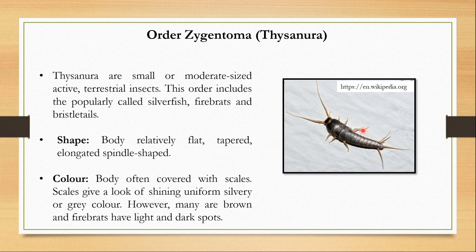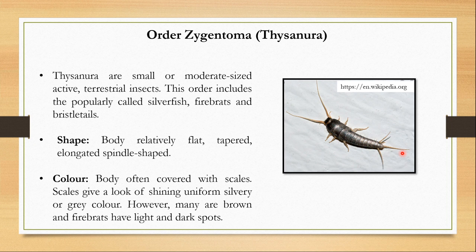The body is dorso-ventrally flattened and tapered towards the posterior end. It is elongated and spindle-shaped. Their color is silvery or grey due to the scales present on their body, which give them a shining, uniform appearance. However, many species are brown, and firebrats have light and dark spots, while bristletails and silverfish are of uniform color.